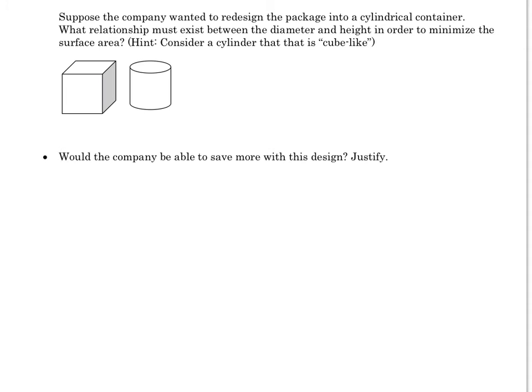Now just like we did in two dimensions, let's ask ourselves the question: suppose the company wanted to redesign the package into a cylindrical container. What relationship must exist between the diameter and height in order to minimize the surface area? So the question is, what would this cube-like cylinder actually look like? If it was cubed, then this dimension would equal that dimension.